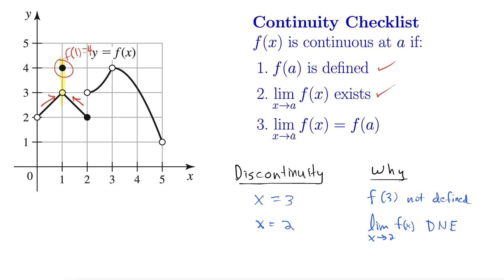1. And that limit is 3. But f of 1 happens to be 4. So this is the one we fail. So we do indeed have a discontinuity here at x equals 1. And the reason for that is that the limit at 1 does not equal the value of the function at 1.